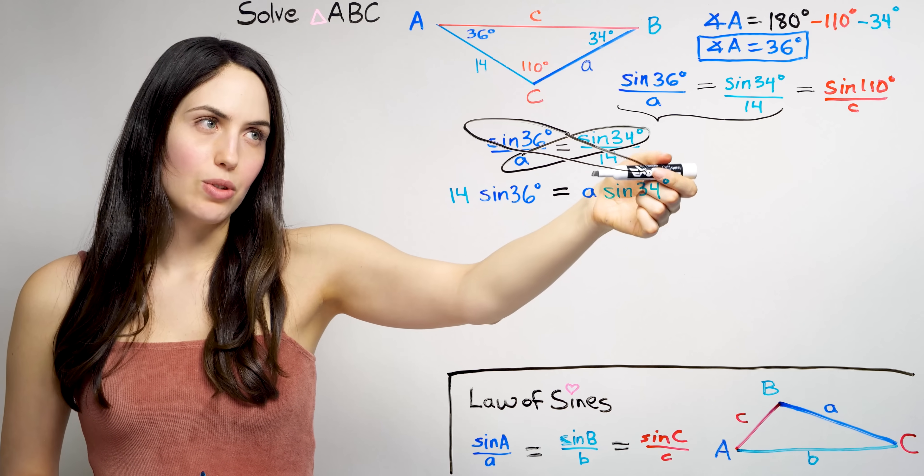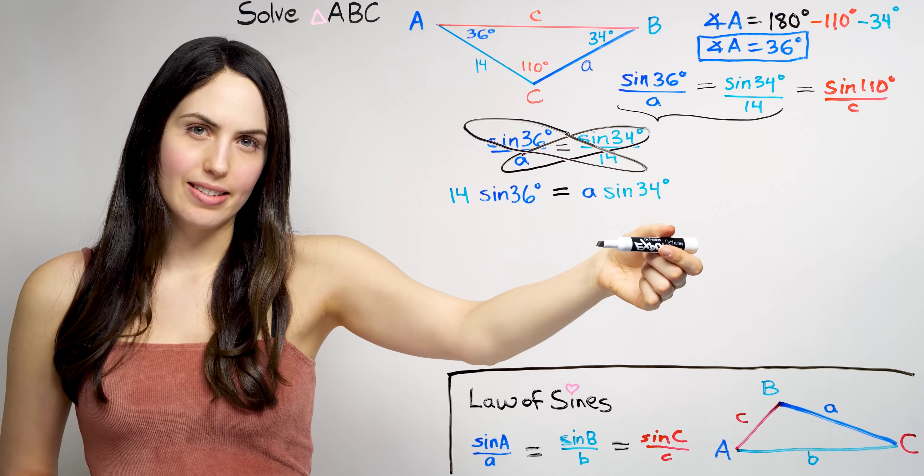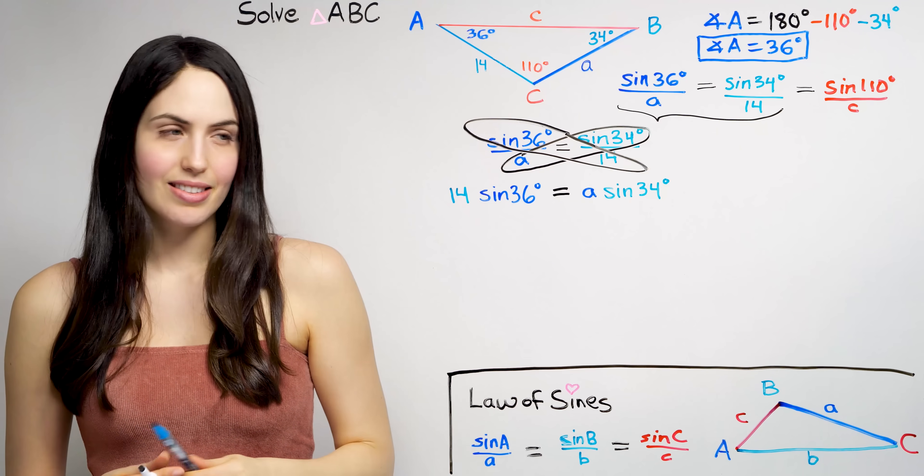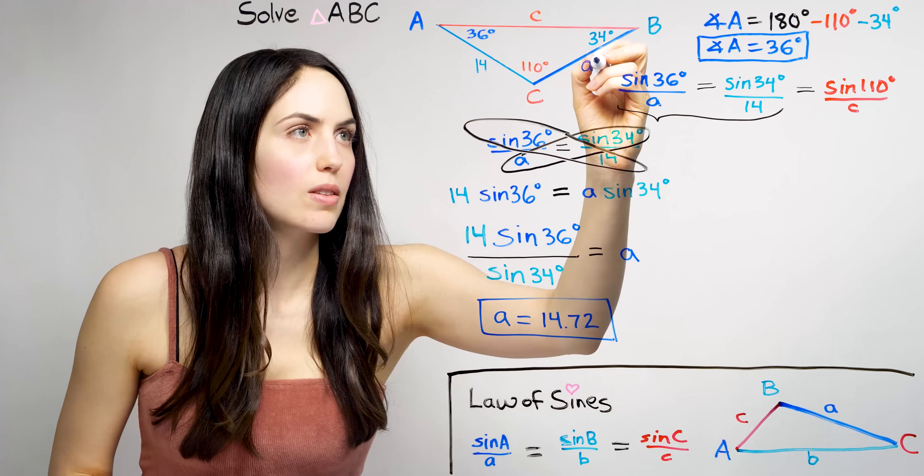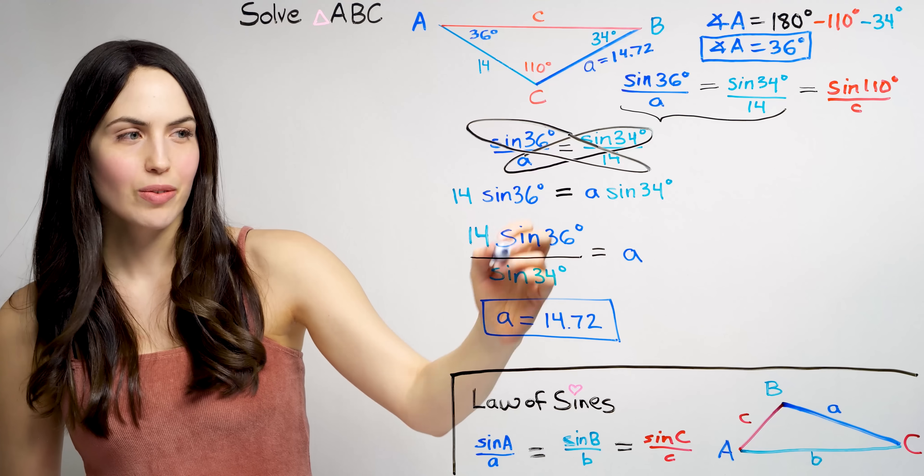Because now it's really clear how to solve for A right away, by dividing out what you don't want there, sine 34 degrees, from both sides. So that's the answer for A.